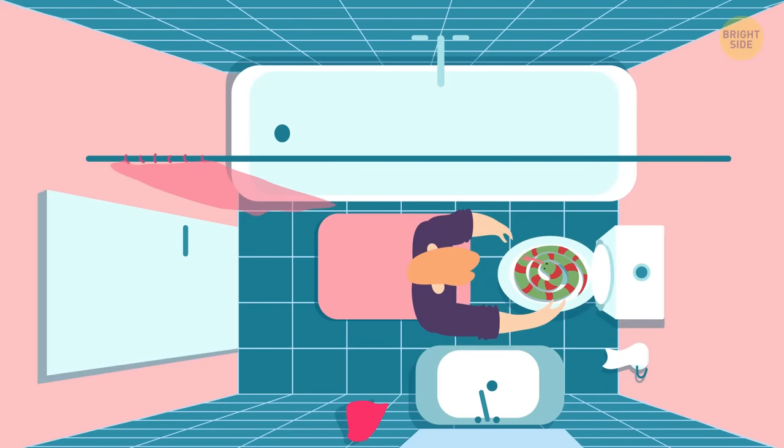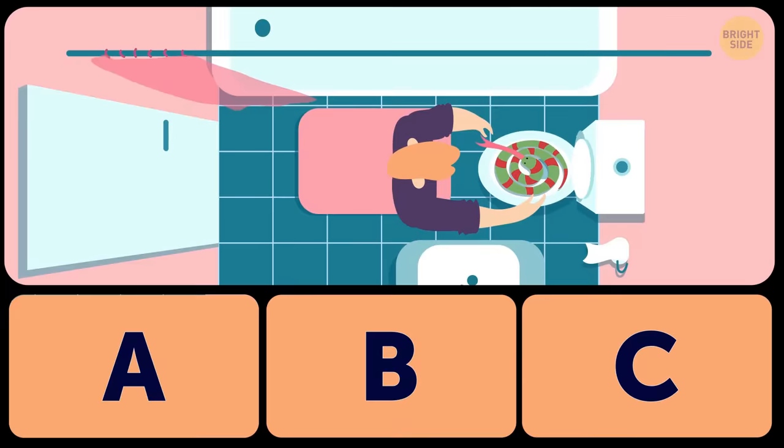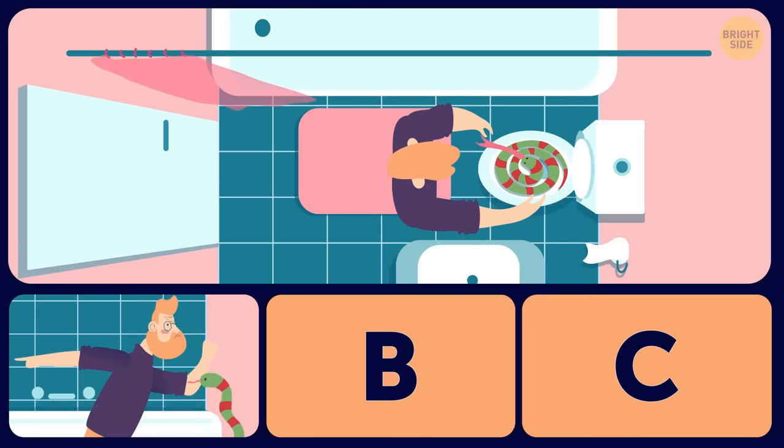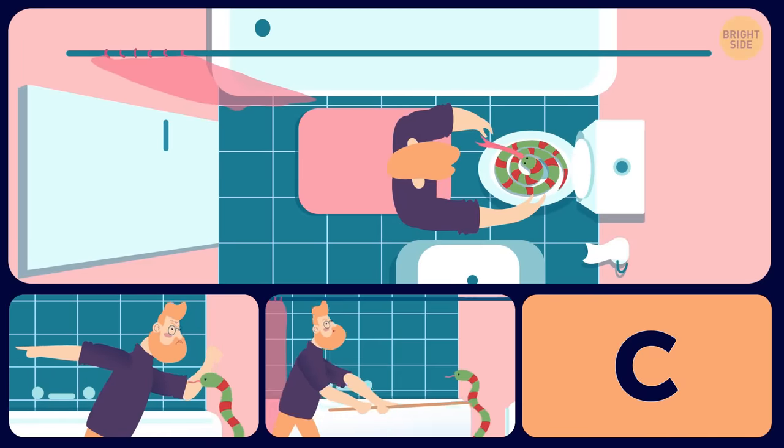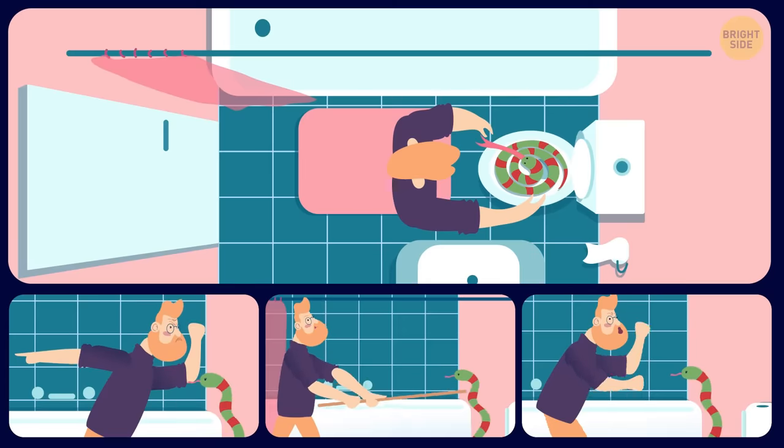11. What would you do if you unexpectedly encountered a snake? Would you A. Move toward the snake and try to shoo it away. B. Poke it with a stick. C. Shout at it and stomp your feet.